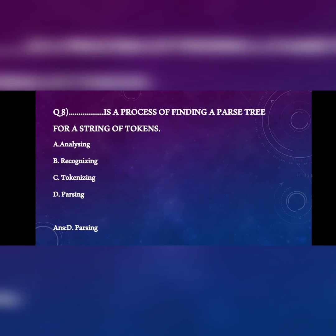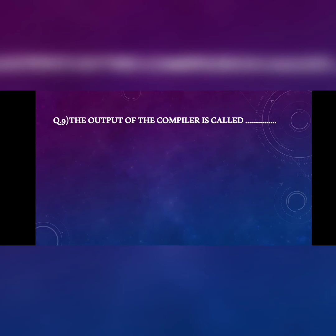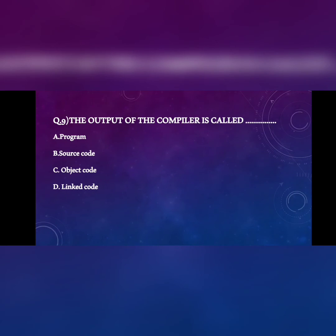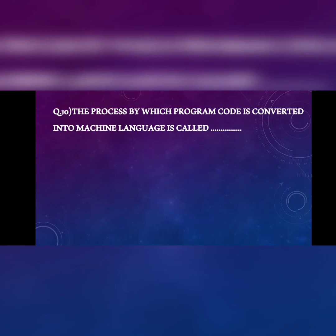Question 9: the output of the compiler is called A) program, B) source code, C) object code, D) link code. The output of the compiler is called a program because it is a special program written in a particular form. The answer is A.